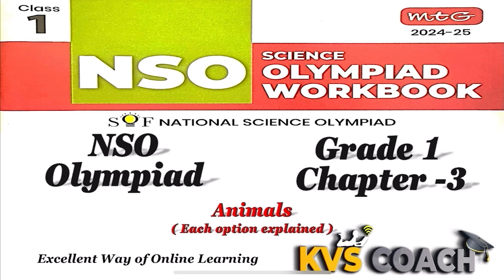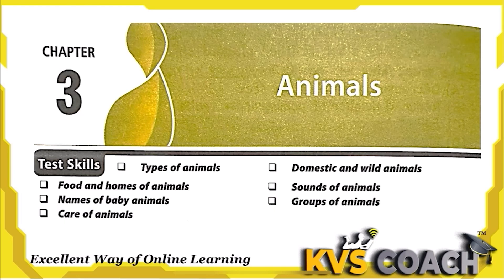Hello dear kids, now we are going to discuss Chapter 3 from your NSO Olympiad workbook. The chapter name is Animals. In this chapter we are going to discuss types of animals, food and homes of animals, names of baby animals, care of animals, domestic and wild animals, sounds of animals, and groups of animals.